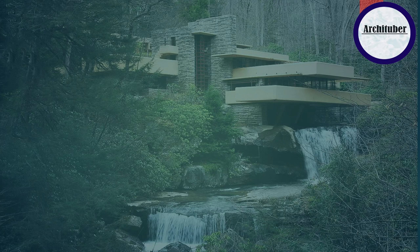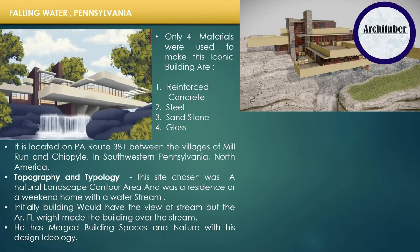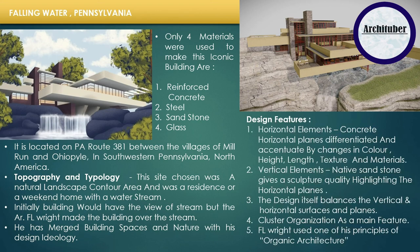Now let's study in detail about the most famous structure by Frank Lloyd Wright — Fallingwater. Construction started in 1935 and the project was completed by 1957. The topography of the land is a natural terrain; it's a contour site and the structure is built according to the topography. Wright initially built the structure over the stream so the building would have the view of the stream. He used only four materials to make this iconic building: reinforced concrete, steel, sandstone, and glass.